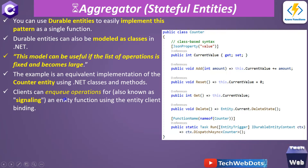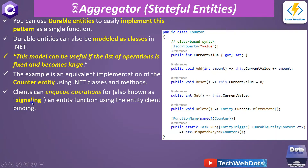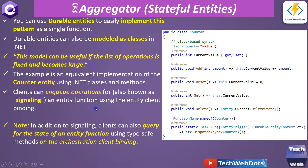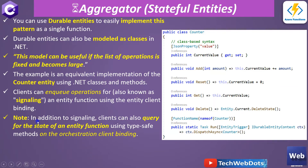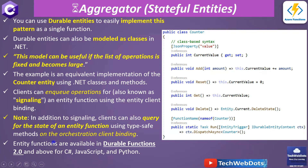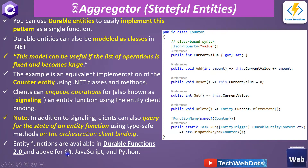Clients can use the enqueue operation — meaning we can give different operations to perform on the entity side — also known as signaling. Signaling means we are telling the entity which operation we want to perform with what input data, using the entity client binding. In addition to signaling, clients can also query for the state of an entity using type-safe methods on the orchestration client binding. Note that entity functions are available in Durable Functions 2.0 and above for C#, JavaScript, and Python.